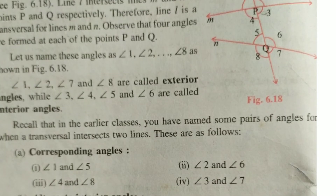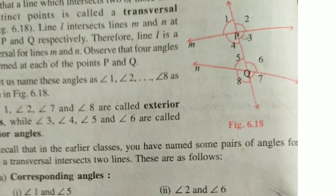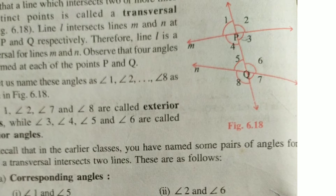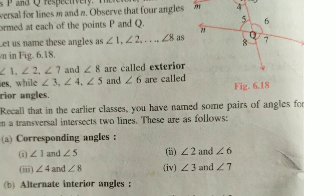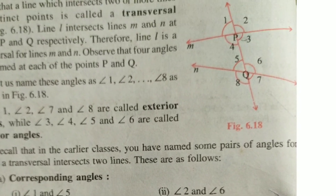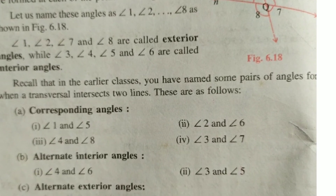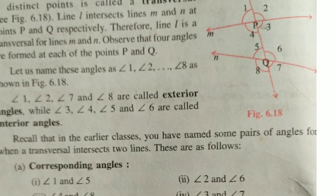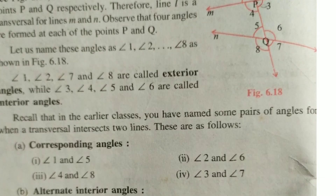Corresponding angles — what are the corresponding angles? Angle 1 and angle 5, angle 2 and angle 6 are corresponding angles. Angle 4 and angle 8, and angle 3 and angle 7 are also called corresponding angles.